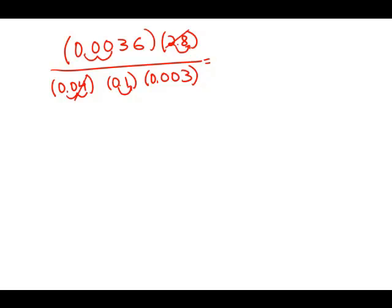So let's just simplify. What are we left with here? We have 0.36 times 7, and then in the denominator we have 1 times 1 times 0.003.